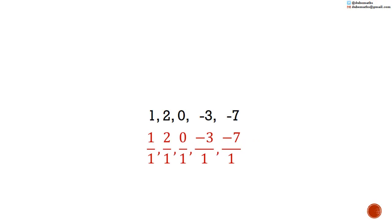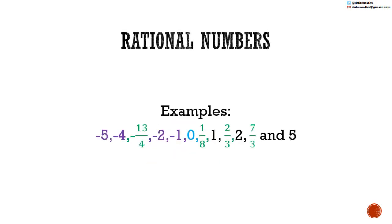1 is the same as 1 over 1. 2 is the same as 2 over 1. 0 is the same as 0 over 1. Negative 3 is the same as negative 3 over 1. Negative 7 is the same as negative 7 over 1. There is a new set, rational numbers, which includes all the numbers you have seen before, plus all other fractions including two-thirds and a half.